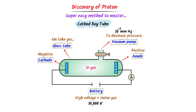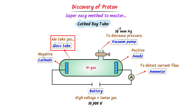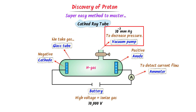The fifth and last part is the ammeter. It is used to detect the flow of current inside the cathode ray tube. To summarize: we take hydrogen gas in the glass tube, and we decrease the pressure of the gas to 10 raised to the power minus 3 mm of Hg using a vacuum pump.